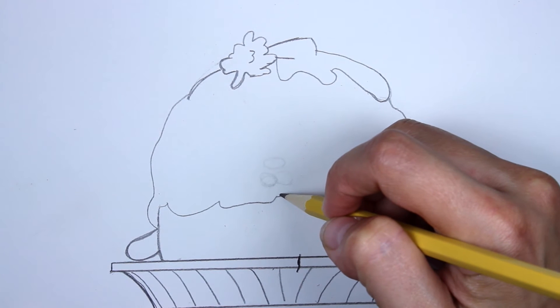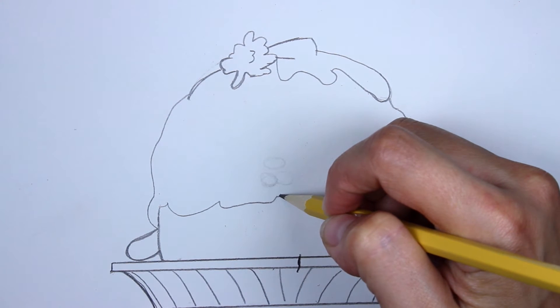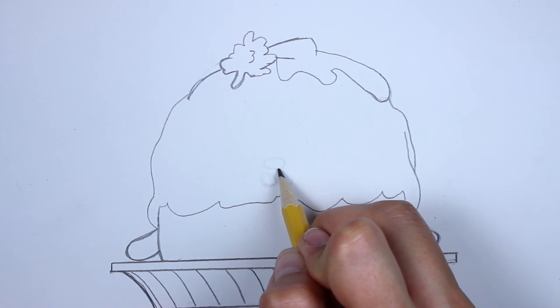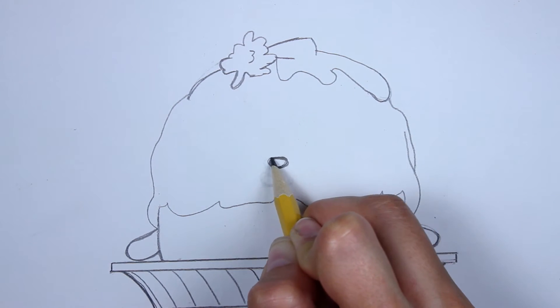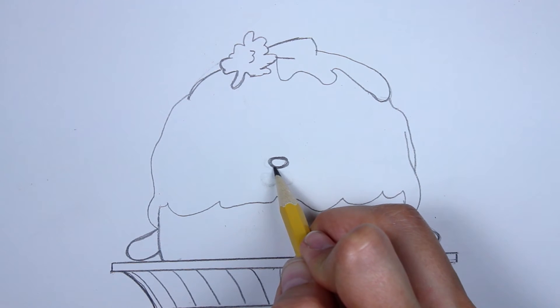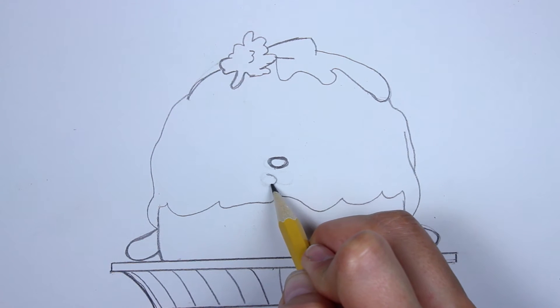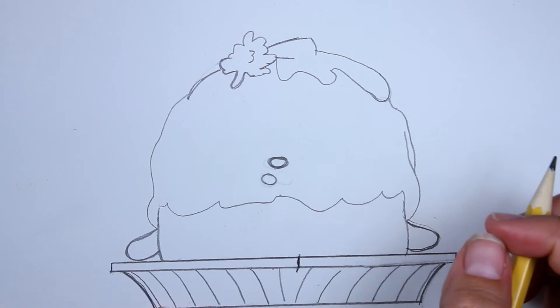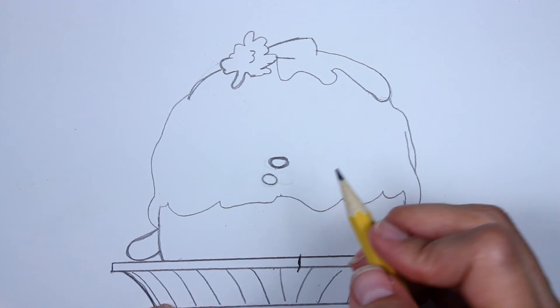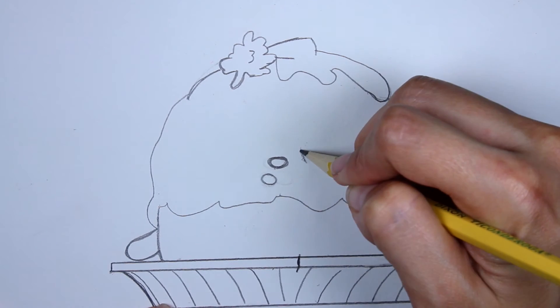All right, for his face, we're going to come to the center here, leave a little bit of space about here. And we're going to make a small oval for the nose. And then the mouth sits a little slightly to the left, and it's a circle. So we're going to make a small circle like that.